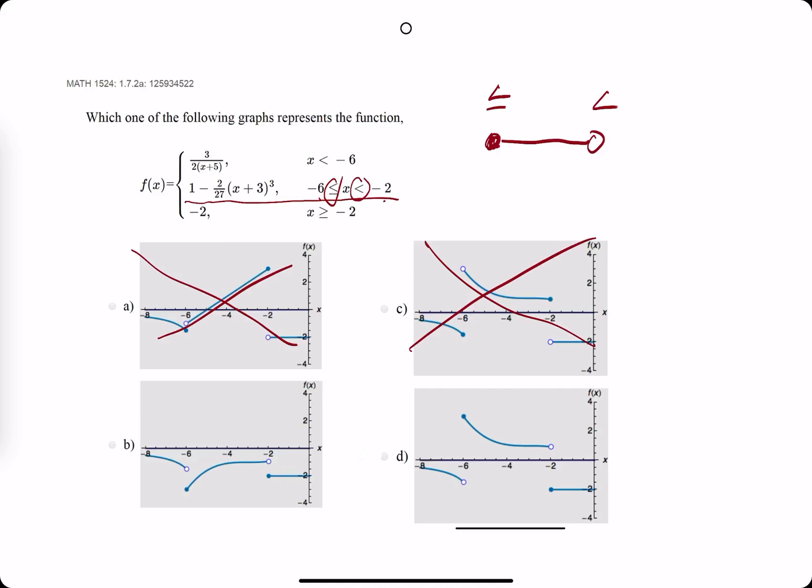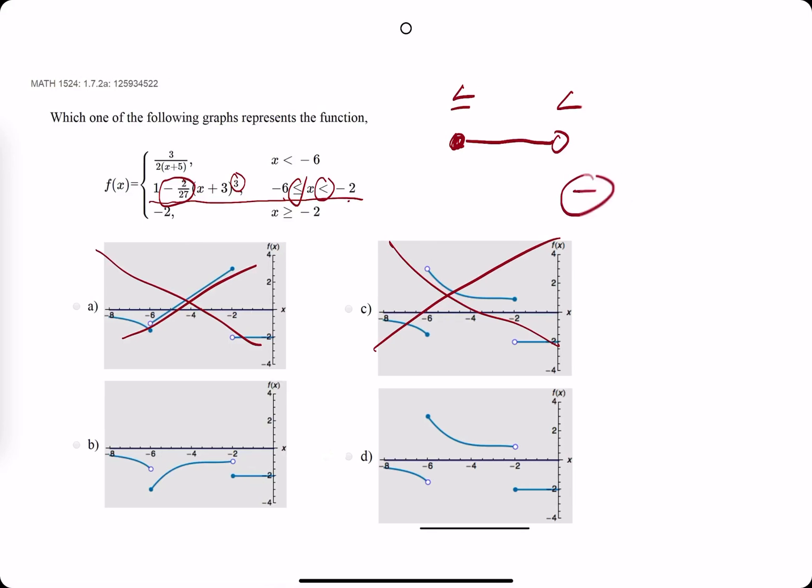So then, we look at the coefficient for the main part of the function. So, x cubed, the coefficient is a negative 2 over 27. When it's a negative coefficient, we're looking for a decreasing middle piece.